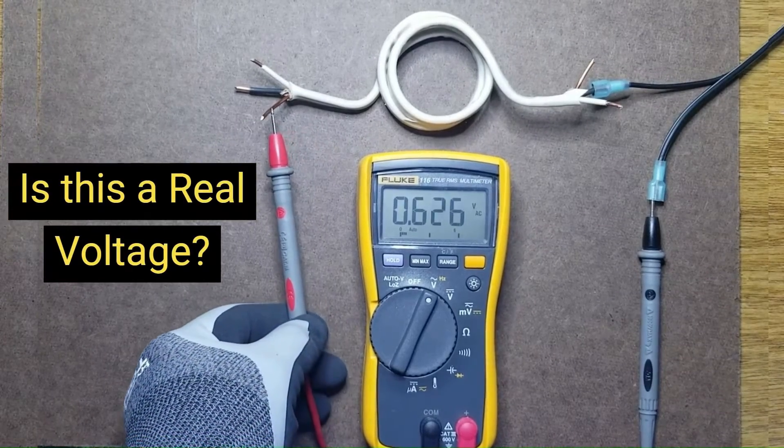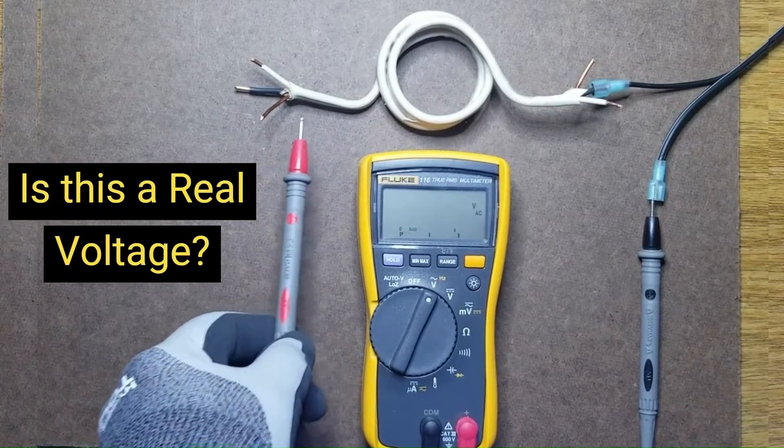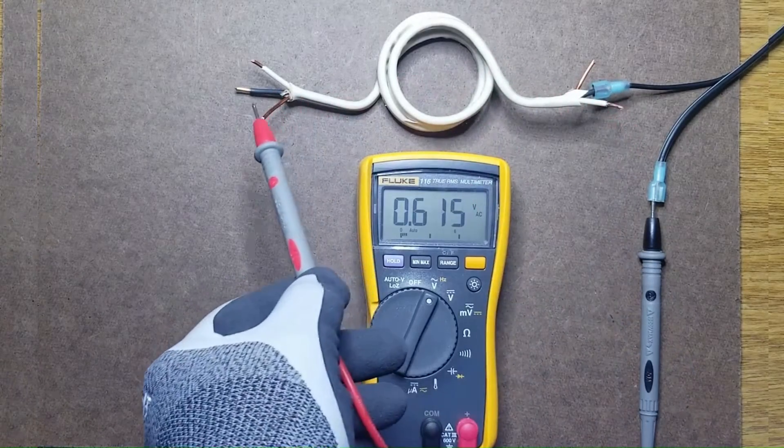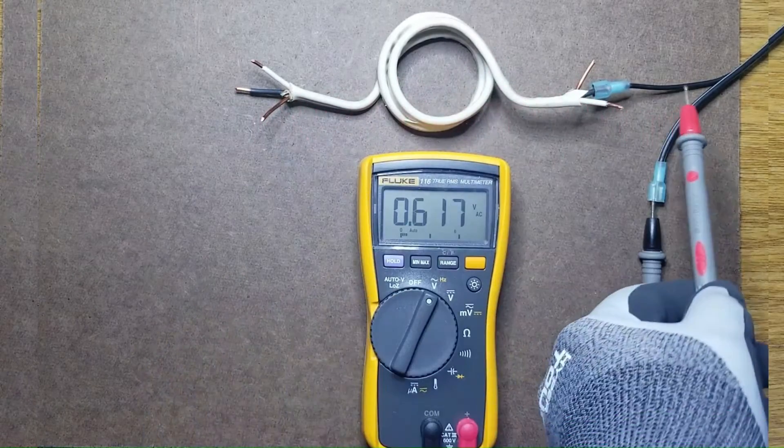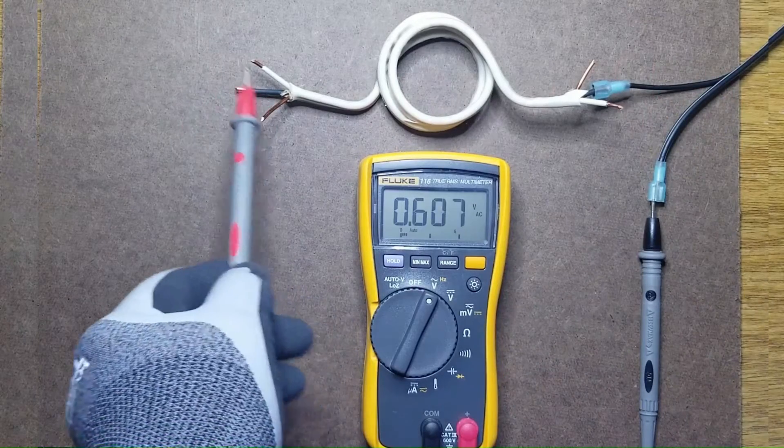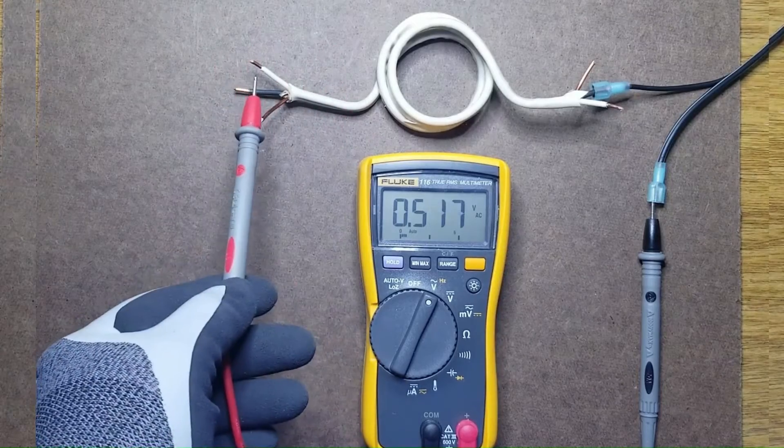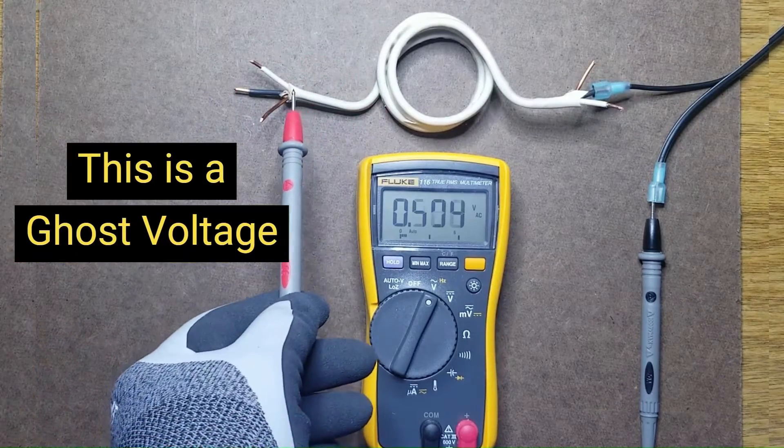Is this a real voltage? It is on a bare copper wire that isn't connected to anything. Although it's in close proximity to this black wire that has 120 volts on it, it isn't actually connected to it. This is a ghost voltage.